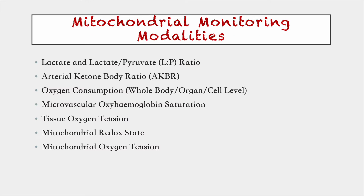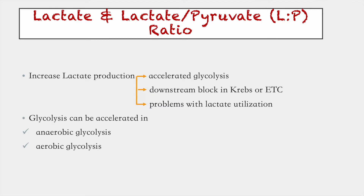Coming to mitochondrial monitoring modalities, there are various options including lactate-to-pyruvate ratio, arterial ketone body ratio, oxygen consumption, microvascular oxyhemoglobin saturation, and others. The first is the lactate and lactate-to-pyruvate ratio. Lactate is a by-product of glycolysis. Glucose is metabolized to pyruvate, which is taken up into the mitochondria and converted to acetyl-CoA by pyruvate dehydrogenase. The remaining pyruvate goes into equilibrium with lactate via lactate dehydrogenase. Lactate is produced in excess when there is accelerated glycolysis, a downstream block in the Krebs cycle or electron transport chain, or a problem with lactate clearance, for example in liver failure.